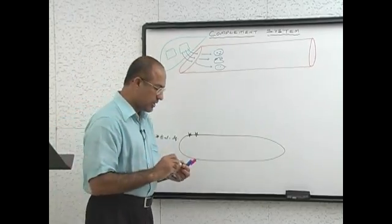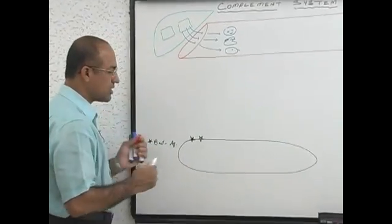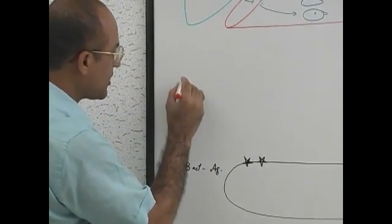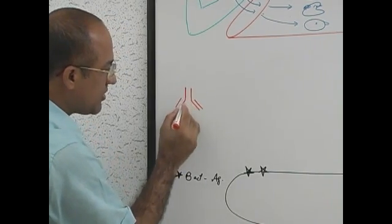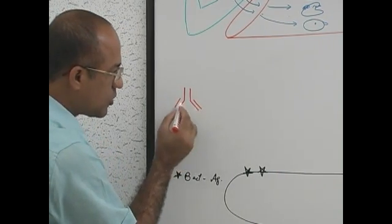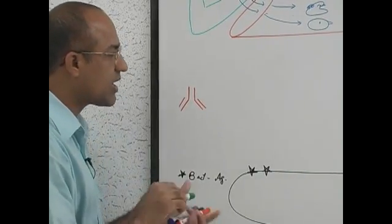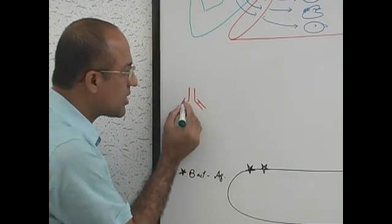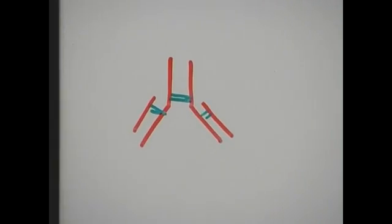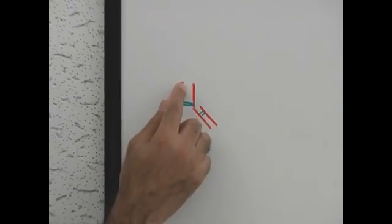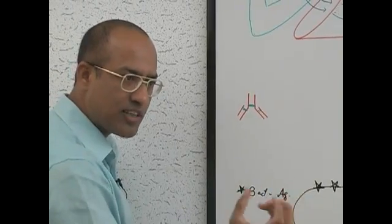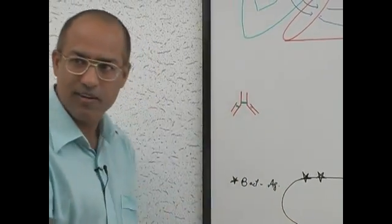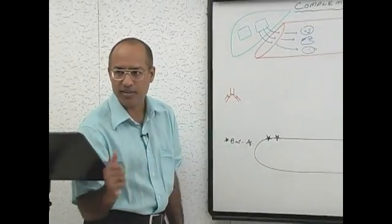Antibodies are made of two heavy chains and two light chains. All these chains are held together by disulfide bonds. Remember the structure of an antibody — it is a tetrapeptide having two heavy chains and two light chains held together by disulfide bonds. This is the basic structure of the antibody.